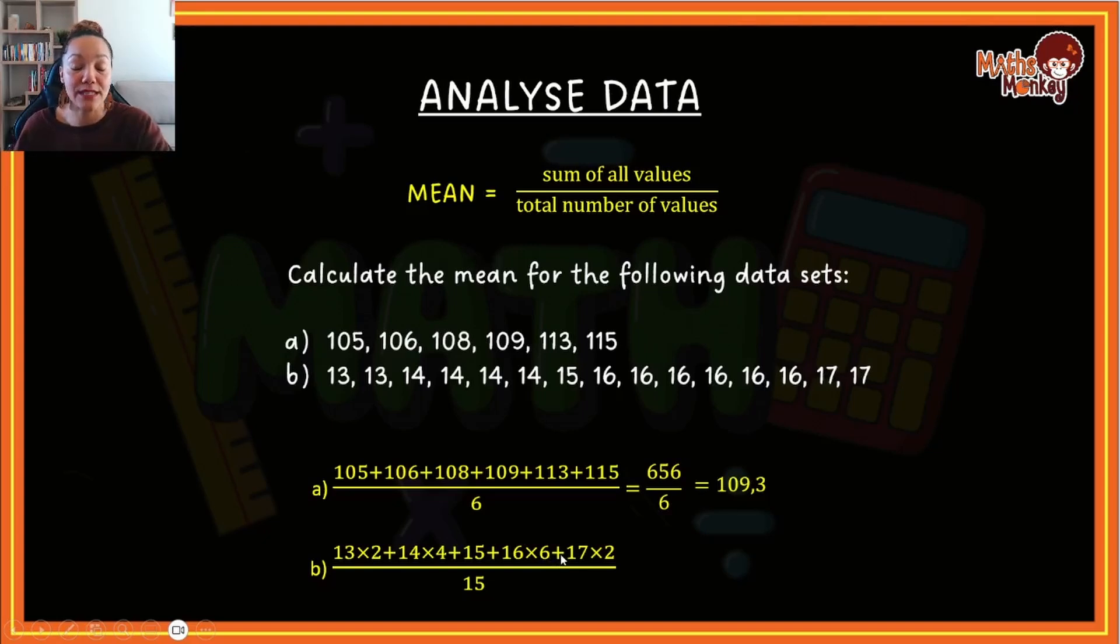Then divide by the amount of numbers we have in the data set. In this data set we've got 15 values, so we add those top values together, divide by 15, and your answer will be 15.1. If I look at the data set, it does reflect the center of that problem.